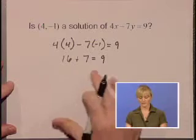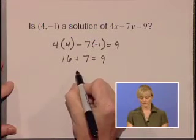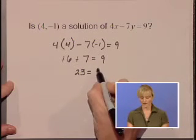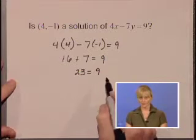We're still checking to see if our side is equal. 16 plus 7 is 23, and our right hand side is 9. We do not have an equality. So, no.